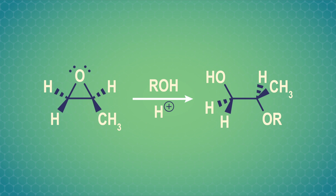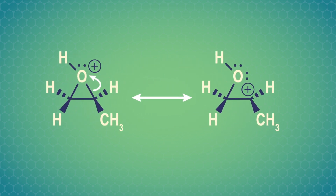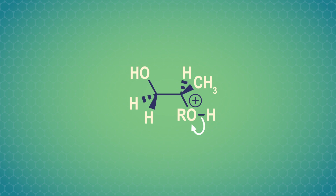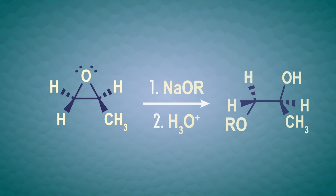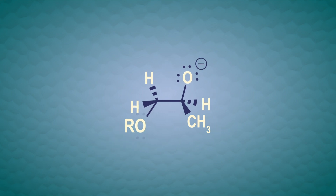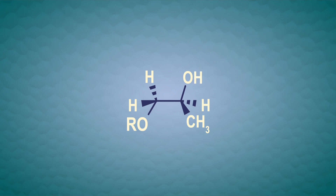Epoxides have a lot of ring strain, so they open up pretty easily. We can break open the ring in two ways – through an acid-catalyzed or a base-catalyzed reaction. In the acid-catalyzed reaction, which is SN1-like, the oxygen in the epoxide gets protonated first, creating an oxonium ion with resonance from two carbocations. So the nucleophile attacks the more substituted carbon, breaking open the ring, followed by a deprotonation to give the final product. In the base-catalyzed reaction, there's nothing to protonate the epoxide, so the nucleophilic attack comes first, with the nucleophile attacking the least-substituted carbon in an SN2 reaction. These two pathways have different regioselectivity, producing different products.